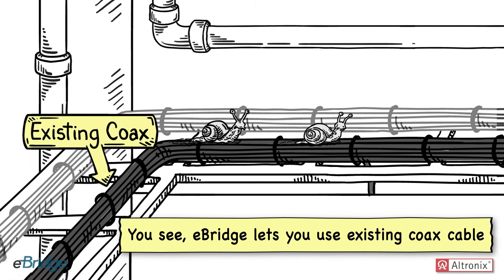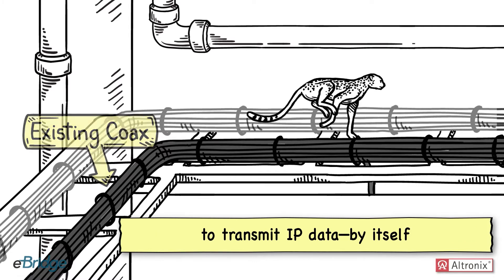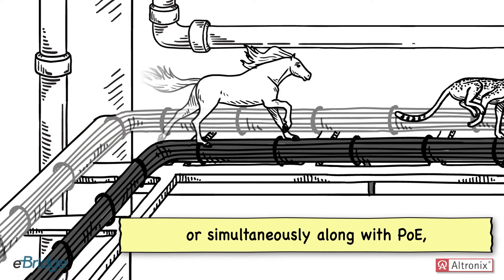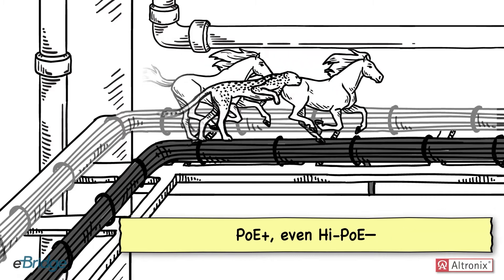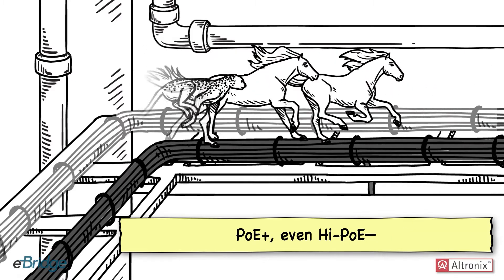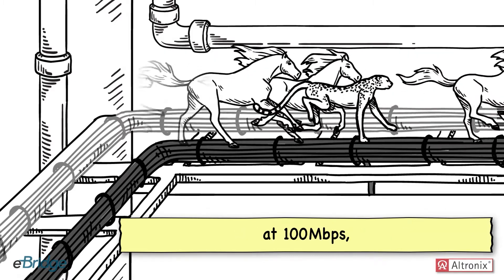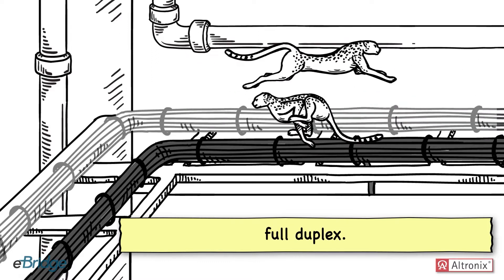eBridge lets you use existing coax cable to transmit IP data by itself or simultaneously along with PoE, PoE+, even high PoE at data rates up to 100 megabits per second. Full duplex.